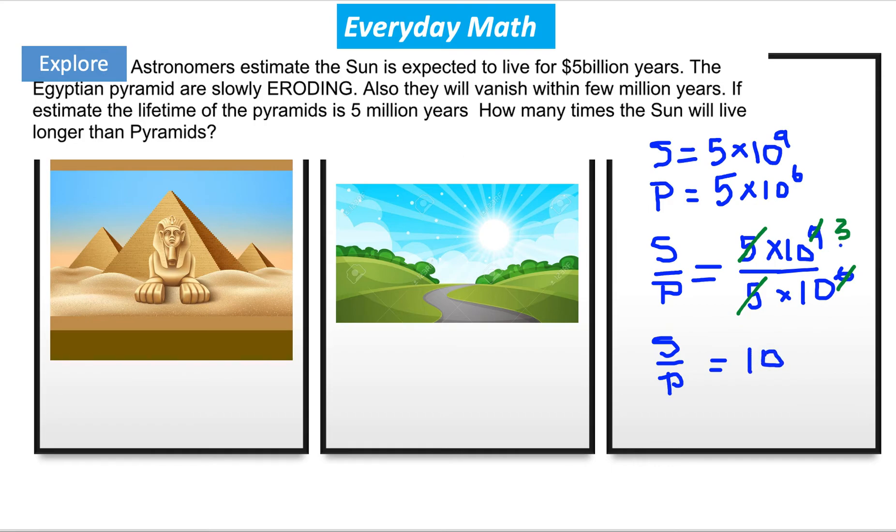And of course, if we write here units, years divided by years, they can disappear, and we have just 10 to the exponent 3. So it means this is going to be about 1,000 times. So the Sun is going to have a longer life than the Pyramids for 1,000 times longer.